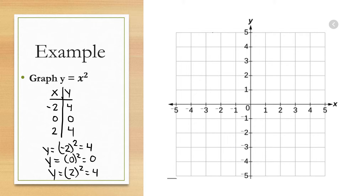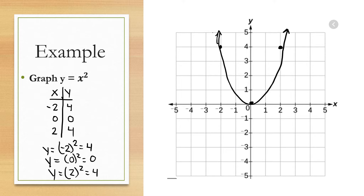Now I'll go to the graph and plot the points: (-2, 4), (0, 0), and (2, 4). Remember the hint: if the highest power of x is 2, the graph will be a parabola, which looks like a U. I'll sketch out that parabola and place an arrow on both ends of the graph, indicating that the graph continues in both directions.